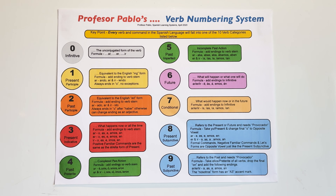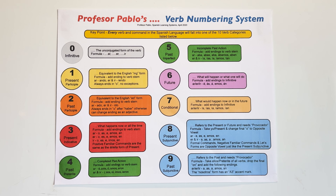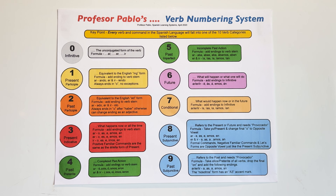Zero is the infinitive — beautiful and perfect, you don't have to change it. One is the present participle, the ING form of the verb. Take trabajar, remove the A-R and add -ando: trabajando, working. Comer becomes comiendo. Leer becomes leyendo — L-E-Y-E-N-D-O — because in Spanish we don't like three vowels together, so the I changes to a Y. The present participle is used with estar: está lloviendo (it is raining), estuvo lloviendo por dos horas (it was raining for two hours), estaba lloviendo cuando me levanté, cuando me desperté.